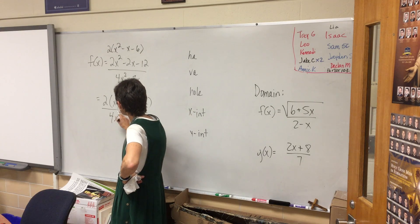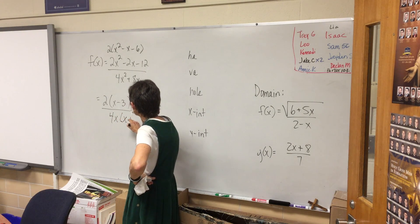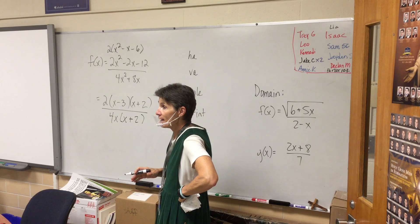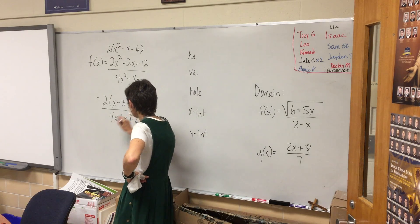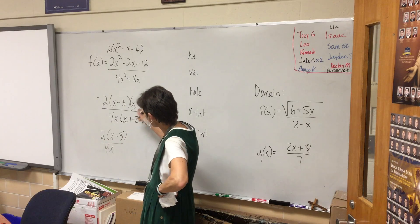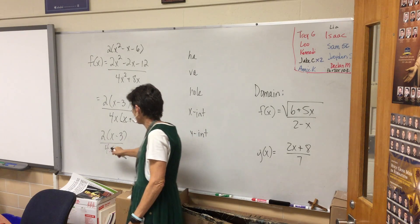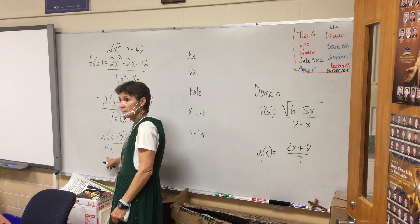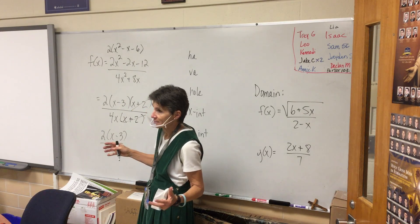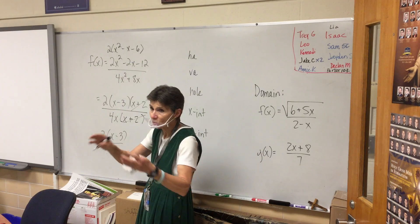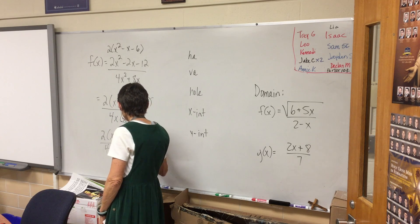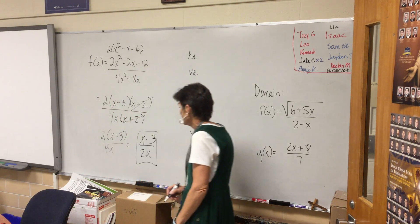Now what about the denominator? I can take out a 4x and I'll be left with x plus 2. Uh-oh, what does that mean? That means we're going to have a hole there. We slash it out. Now I can also cancel a two. Is that going to produce a hole? No, because it's not an x. You got to have an x to be a hole or an asymptote. I don't have it but I can just reduce it.